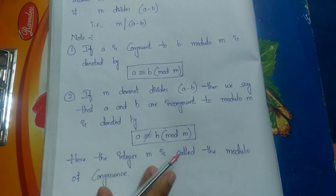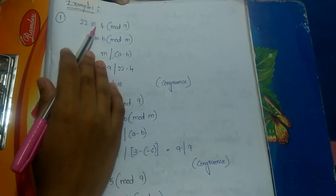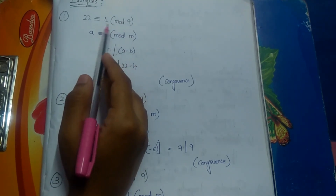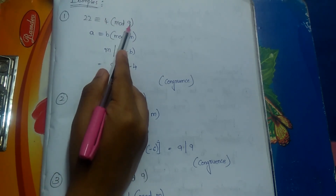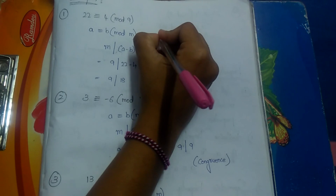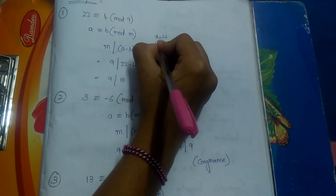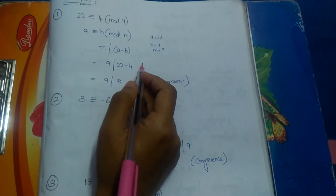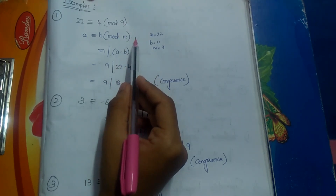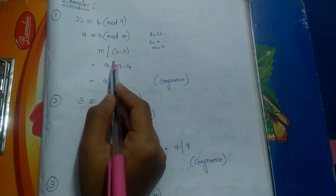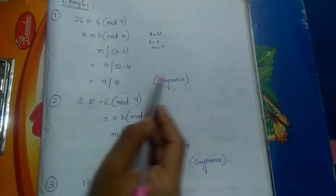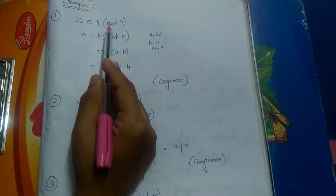First example: is 22 congruent to 4 modulo 9? Comparing with the formula a ≡ b (mod m), we have a = 22, b = 4, m = 9. Using the condition m divides a minus b: 9 divides 22 minus 4, which is 9 divides 18. Since 9 divides 18, therefore 22 is congruent to 4 modulo 9.